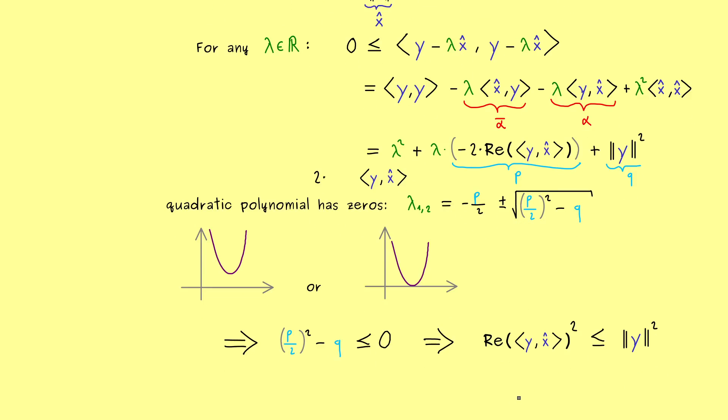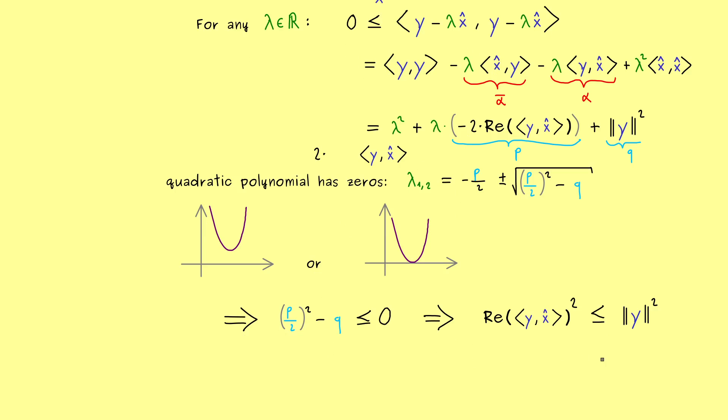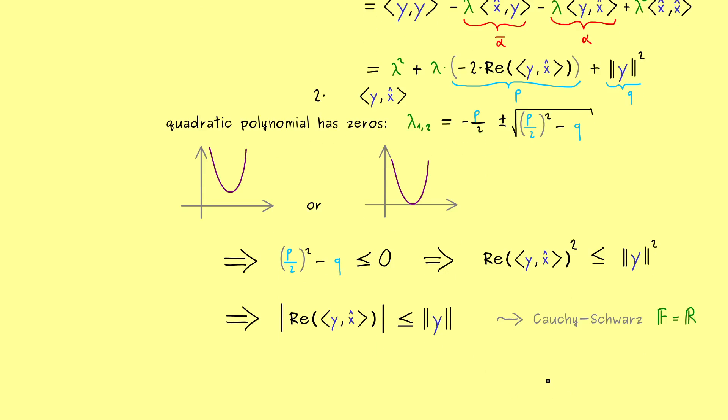So the implication we have is that this is less or equal than zero. And by putting in p and q we get that the real part of the inner product here squared is less or equal than the norm of y squared. And then you see, in the next step we can simply take the square root on both sides. And then we get that the absolute value of this inner product is less or equal than the norm of y. And this is almost what we wanted to show, because only this real part here now has to vanish. And indeed this happens if our field of scalars is given by the real numbers. So we have proven Cauchy-Schwarz for real vector spaces now.